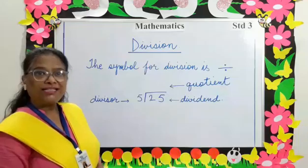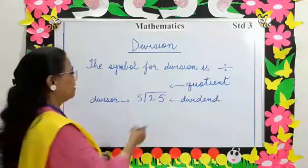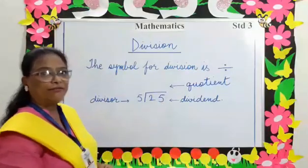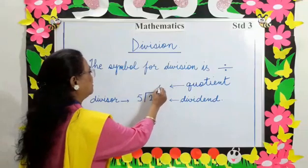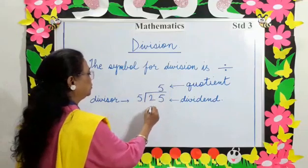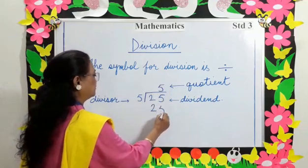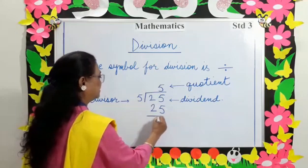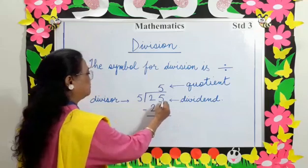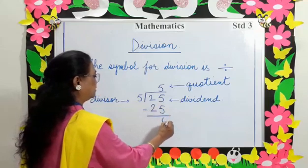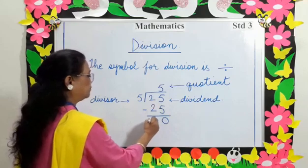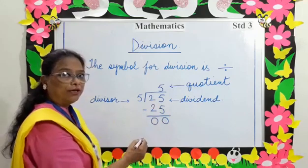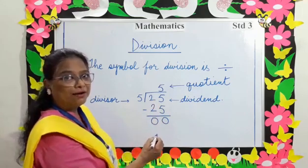So let's divide. 5 goes into 25, 5 times. 5 times 5 is 25. Subtract: 5 minus 5 is 0, 2 minus 2 is 0. The 0 here is known as the remainder.